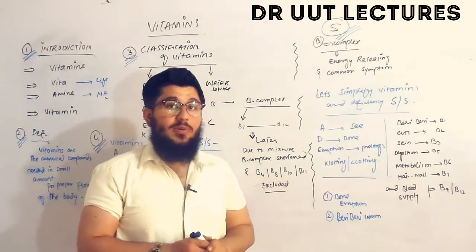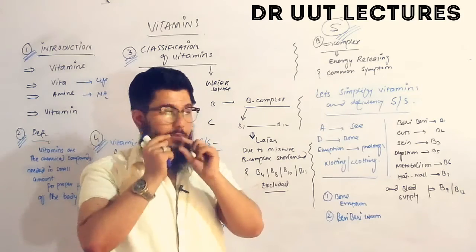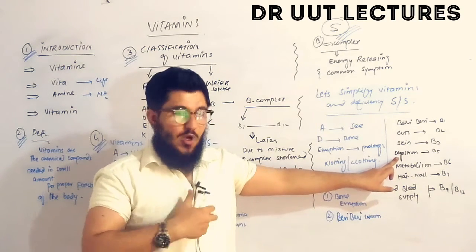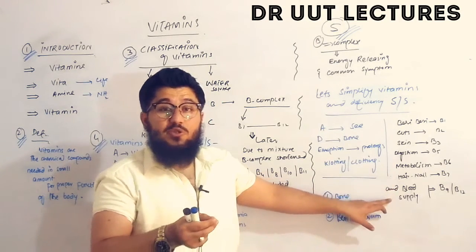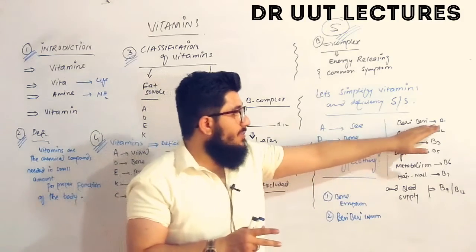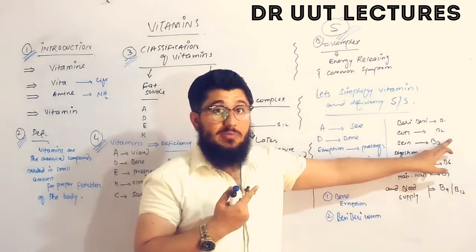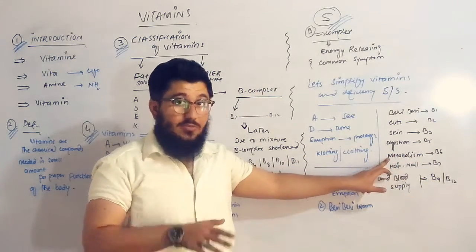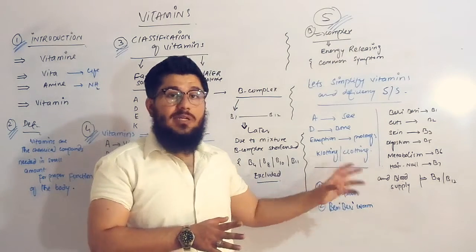For the B complex, use the mnemonic 'berry berry worm.' The worm enters through the mouth, cutting the lips (Vitamin B1 beriberi, B2 lip cracks), then enters the GIT causing digestion and metabolism problems (B3 pellagra, B5 digestion, B6 amino acid metabolism), then affects the whole body including hair and nails (B7), and finally causes blood problems like megaloblastic anemia (B9 and B12).